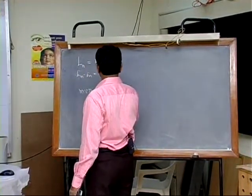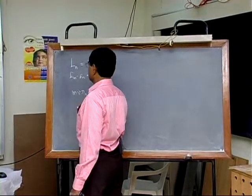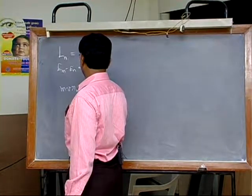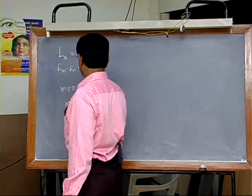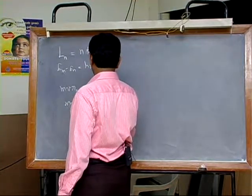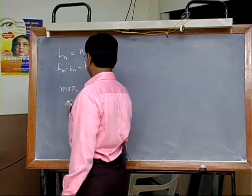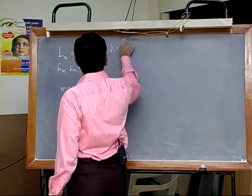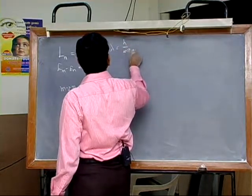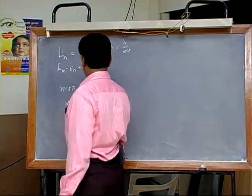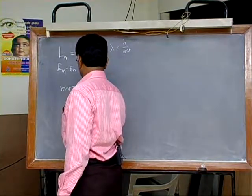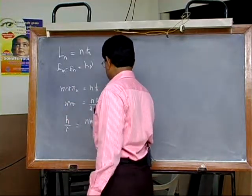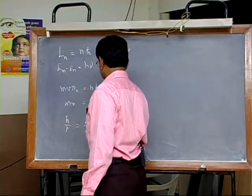This is nh cross. This is mvr: mvr equals nh by 2π. It is equal to h by λ. So, mv equals h by λ, which equals nh by 2π.